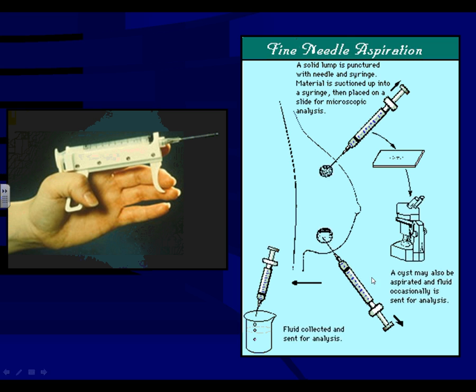What we see here is a solid mass and a cystic mass. Sometimes in breast lesions, cysts are aspirated and it's therapeutic because a large distended cyst in the breast can be quite tender and uncomfortable, and just aspirating the fluid will provide immediate relief for the patient.